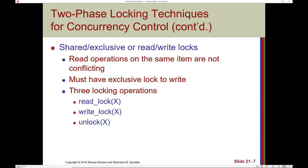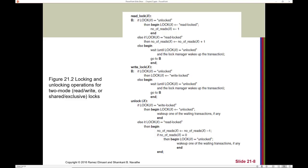Most database management systems therefore have what are called shared/exclusive or read/write locks. This allows multiple read operations on the same item at the same time without conflict — this is referred to as a shared lock. But if we need to write to an item, we must obtain an exclusive lock. Instead of just lock and unlock, we now have three locking operations: read-lock, write-lock, and unlock.